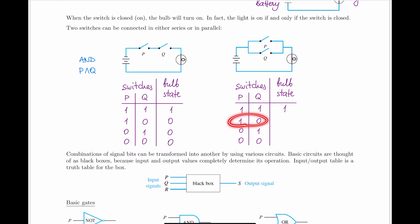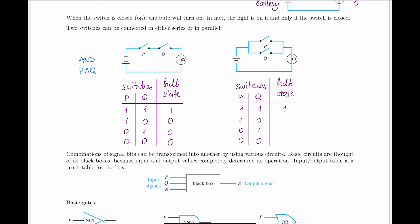If P is closed but Q is open, current goes down both wires — it won't make it through Q but it will make it through P, exit through there, and get to the bulb. So we still have light. In the next case, P remains open and Q is closed, so current won't make it through the P wire but will make it through the Q wire down to the lamp — we have light in this case as well.